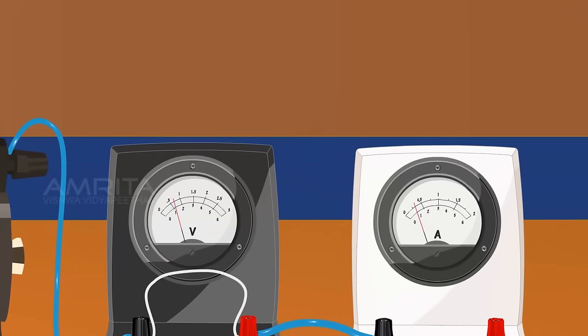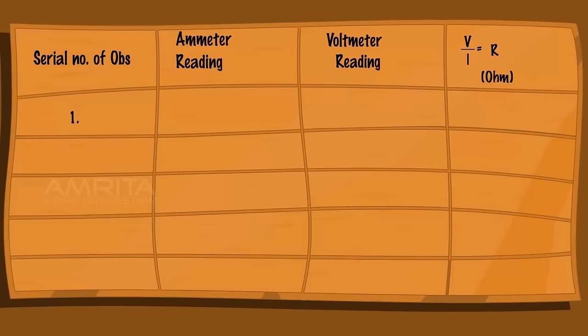Adjust the sliding contact of the rheostat and note down the value of potential difference V from voltmeter and current I from the ammeter.